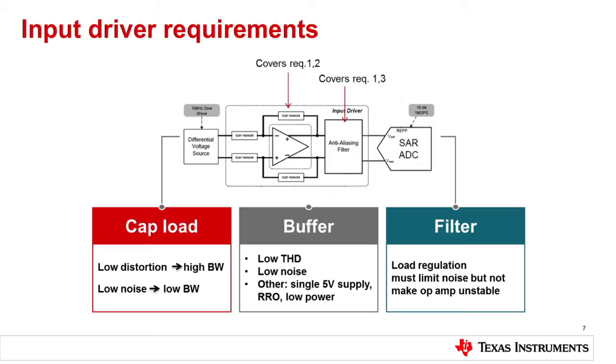Low load distortion usually means picking a part that is high bandwidth. Low noise also means low bandwidth — which seems counterintuitive and even contradictory. But when we talk about high bandwidth in terms of load distortion, we're talking about intrinsic bandwidth. When we say low bandwidth for low noise, we're really talking about externally filtering — putting a cap around the feedback, a snubber, an isolation resistor, and the like. So we're talking about two different things.